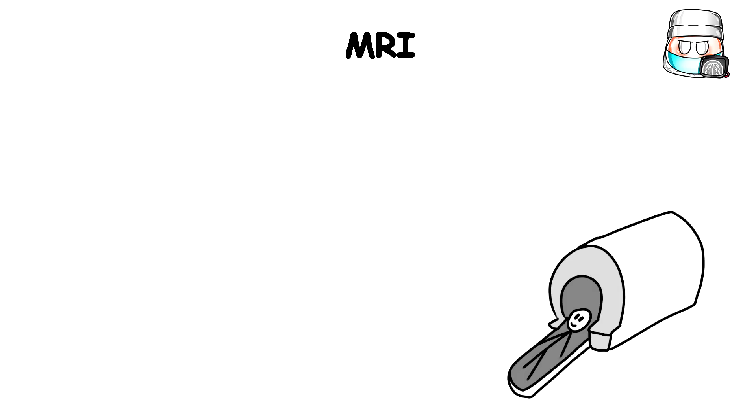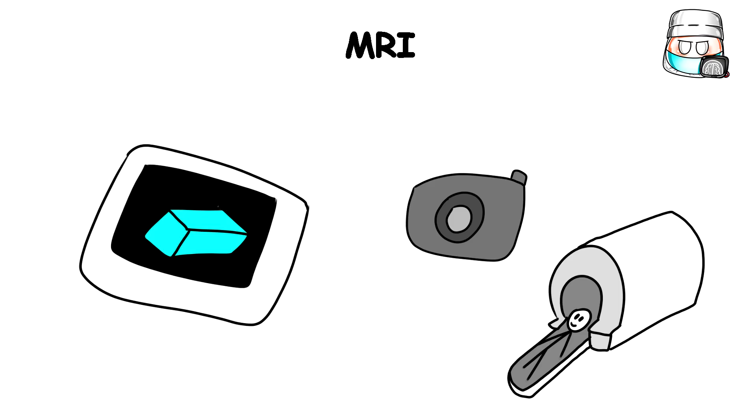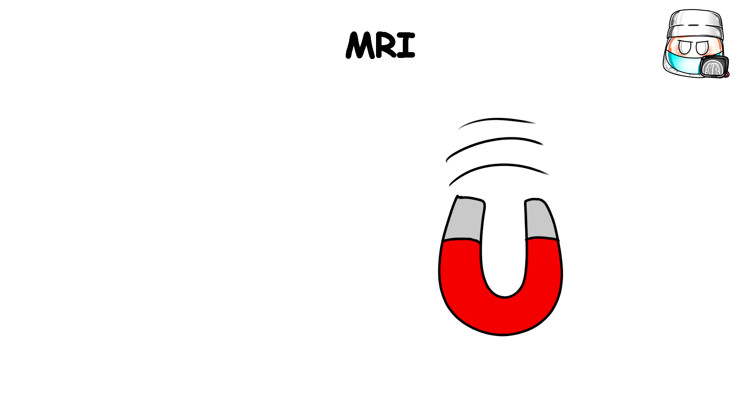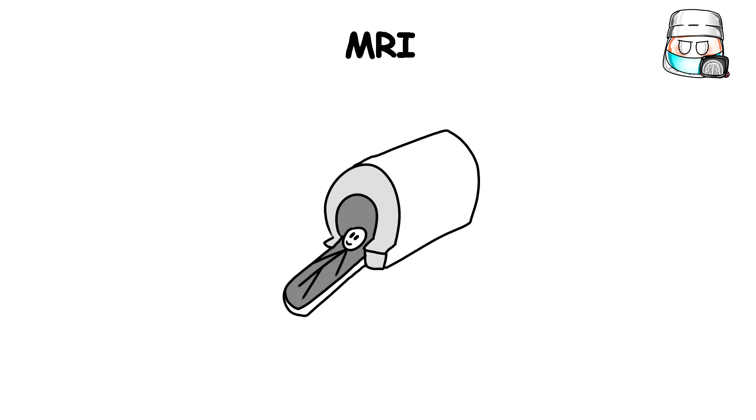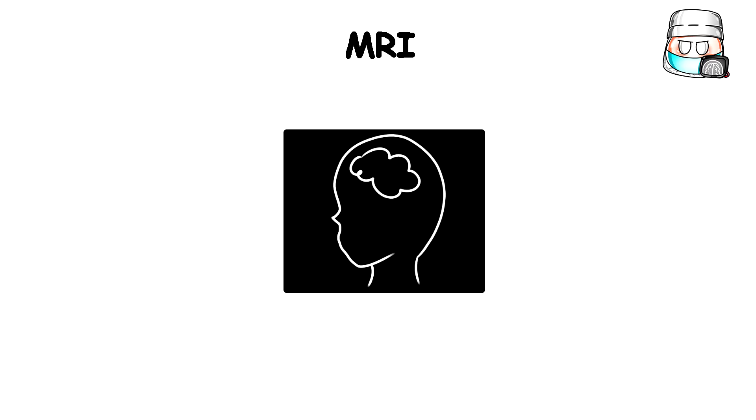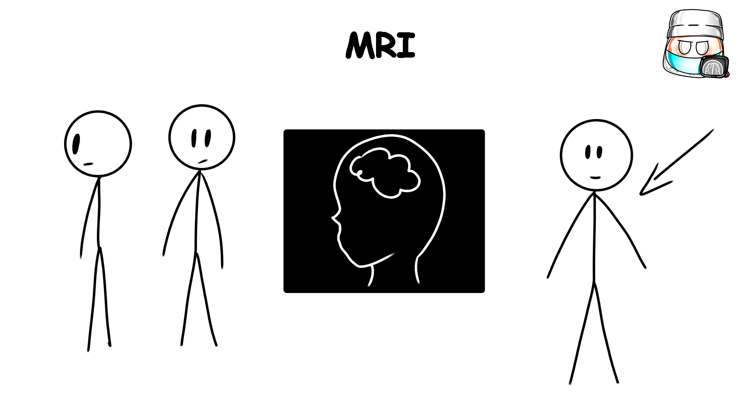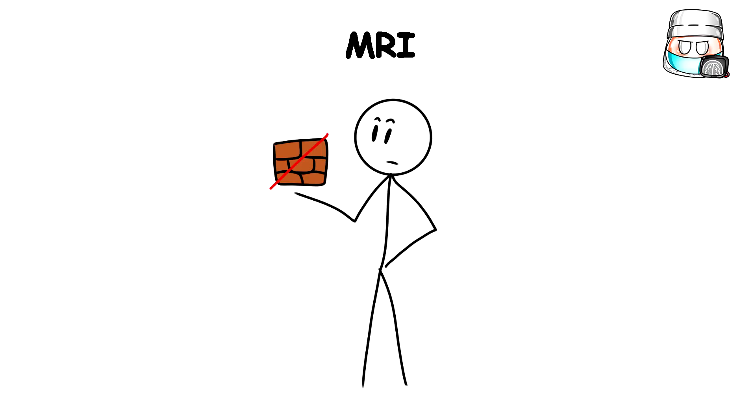An MRI is like a highly sophisticated camera that can capture extremely detailed 3D pictures using powerful magnetic fields and radio waves instead of light. But rather than just showing the outside surface, it produces clear images that allow you to slice into the body's interior from multiple angles.